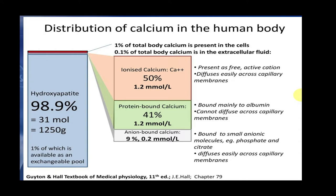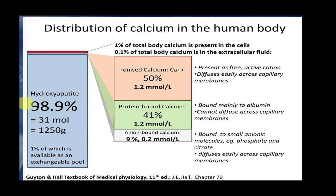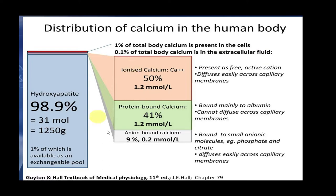Out of the 99 percent calcium present in bones, 98 percent is in the form of hydroxyapatite crystals, which serve as a reservoir of calcium in bones. It is not easy to exchange this amount. Only one percent out of 99 percent is available as an exchangeable pool—meaning only one percent can be exchanged if there is low concentration of calcium in the ECF. One percent of total body calcium is in cells and 0.1 percent is in the ECF.